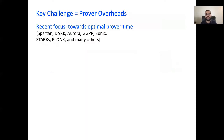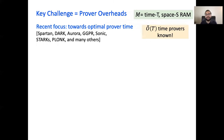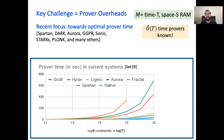A key challenge in scaling general-purpose zero-knowledge is the high computational complexity of constructing such proofs, and this has been the focus of a recent line of research. In terms of time complexity of the prover, we are in great shape. In theory, we now know of constructions where the prover is asymptotically almost optimal, and in some settings one can even achieve linear time provers. The situation is surprisingly quite similar in practice, and a number of systems with concretely efficient provers are being deployed.